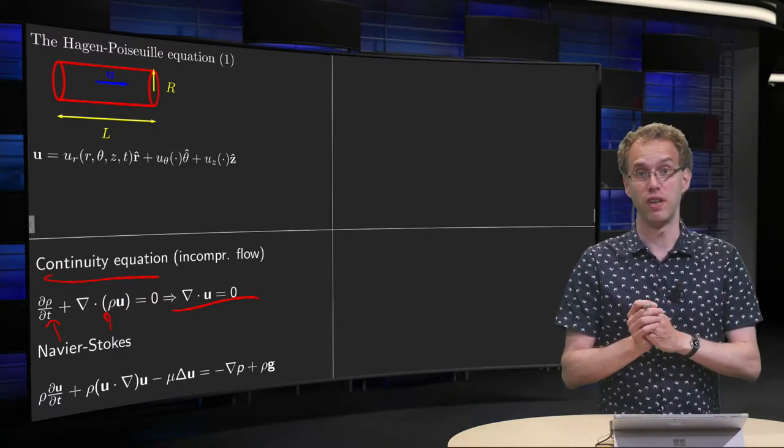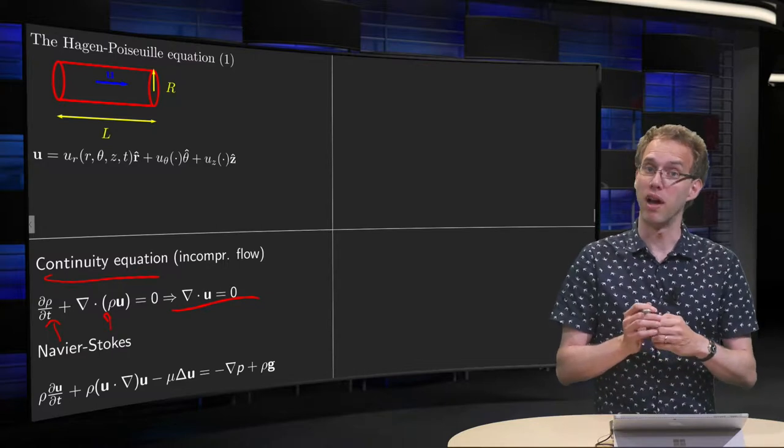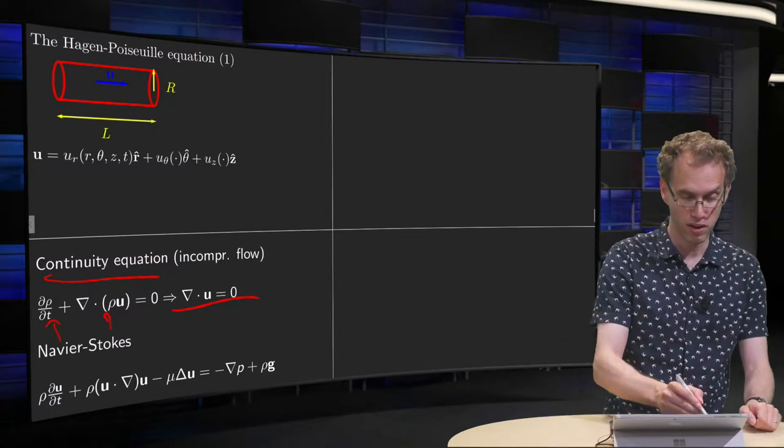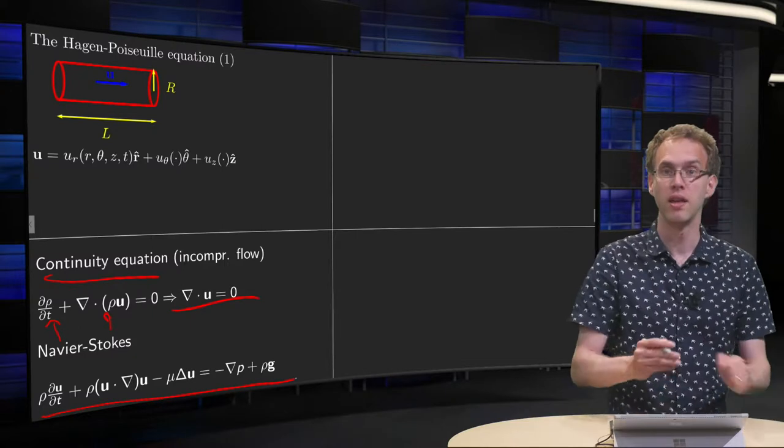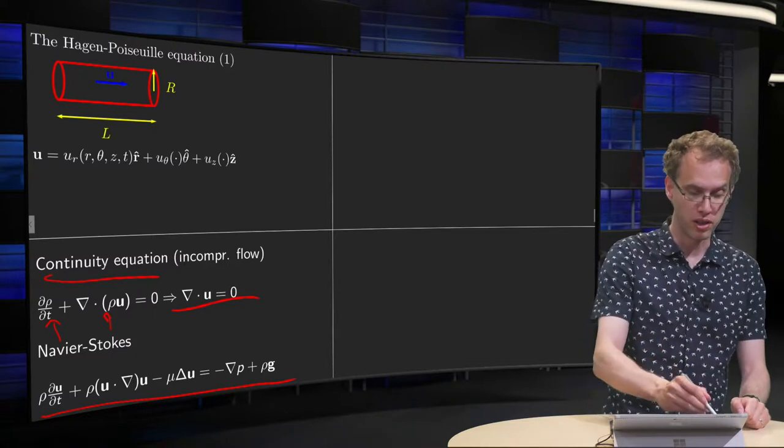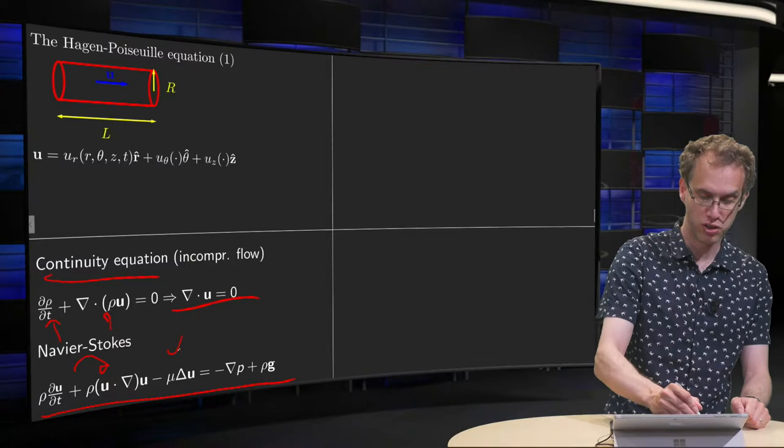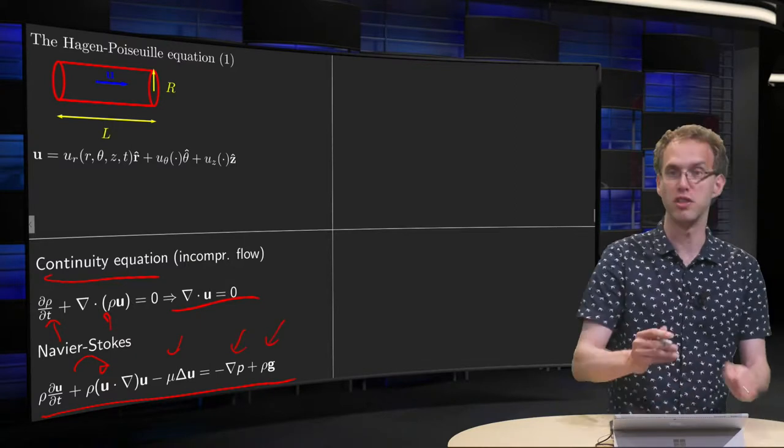And then we have conservation of momentum, so we will have the Navier-Stokes equation, with all kinds of derivatives, a viscosity term, a pressure term, and a gravity term.